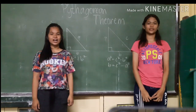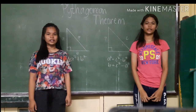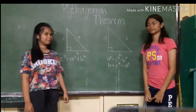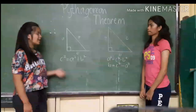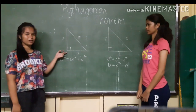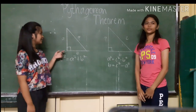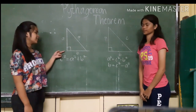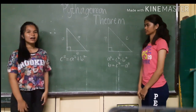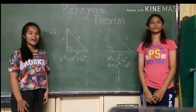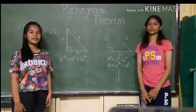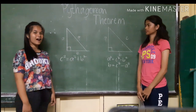We are here to discuss the Pythagorean theorem. In this example, notice that we have a right triangle. A right triangle is a triangle with a right angle.